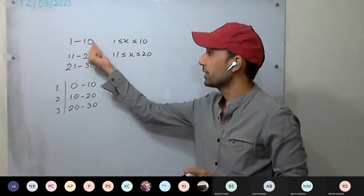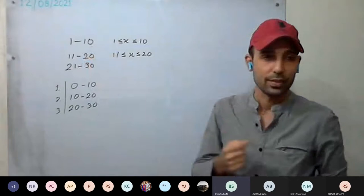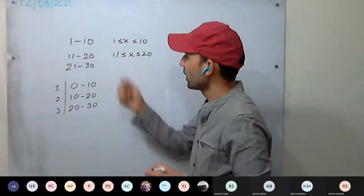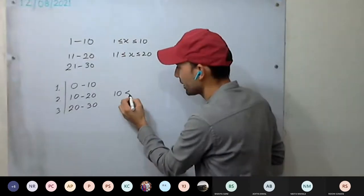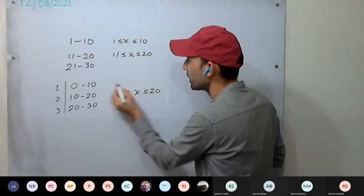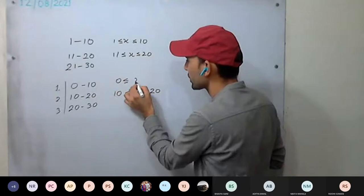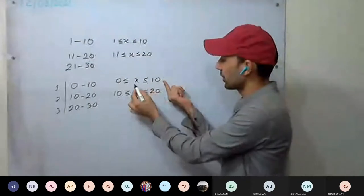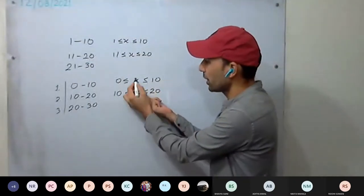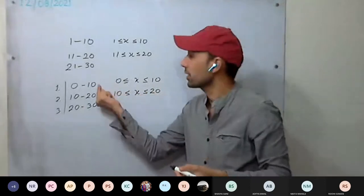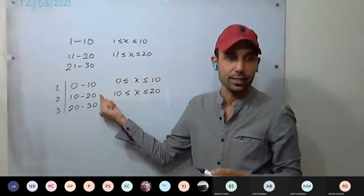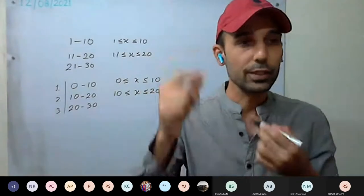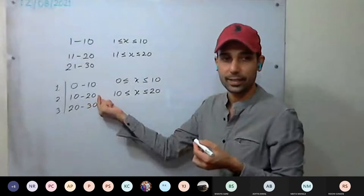So if we write inclusive, x equal to 10 satisfies both equations — it means 10 can go to this class as well as to the next class. Some students may put it in the first class, some in the second class.